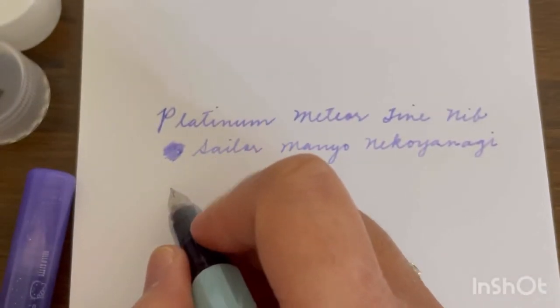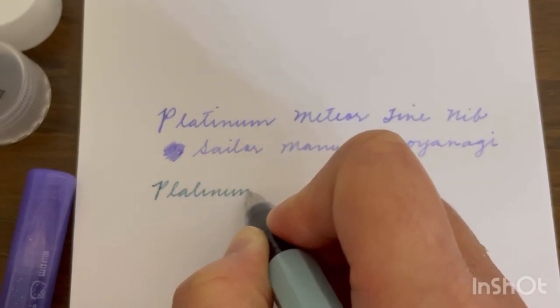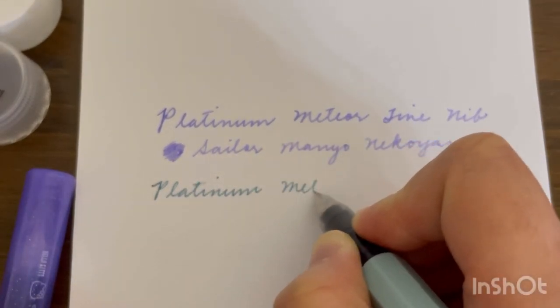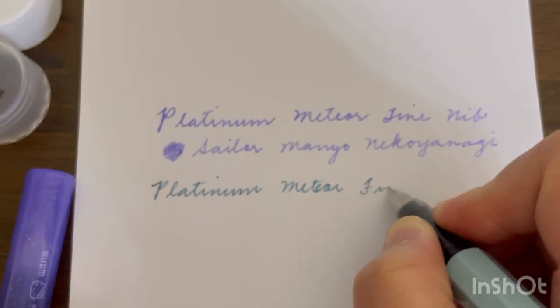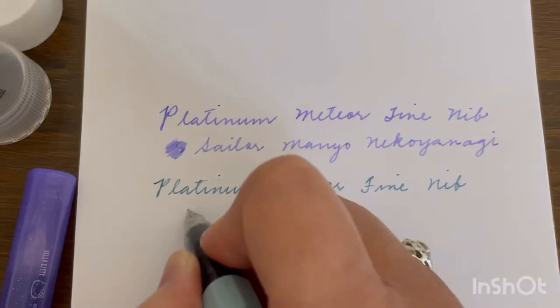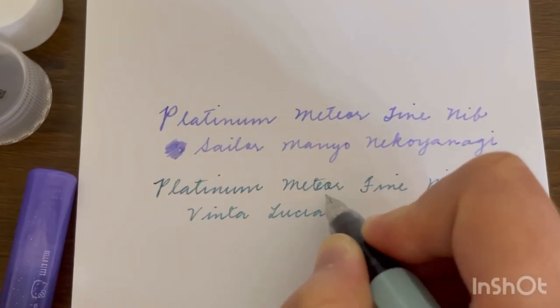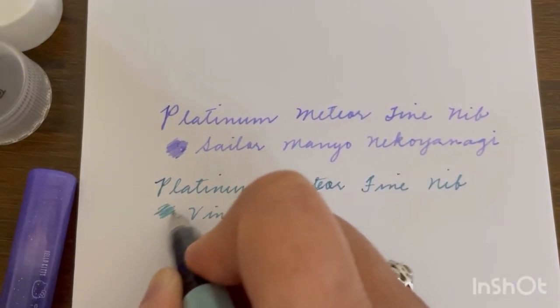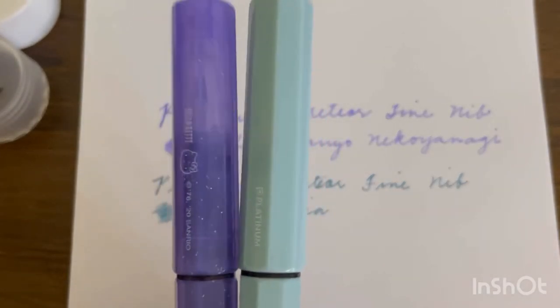This one is Platinum as well, Platinum Meteor. This is in fine nib. The ink that I'm using here is Vinta Lucia. As you can see, even though these are both fine, they write really nice and they write really smoothly.